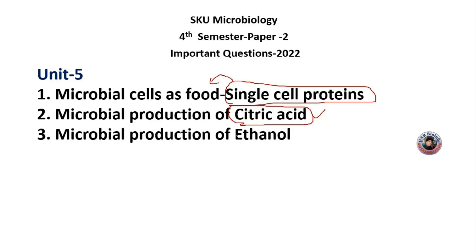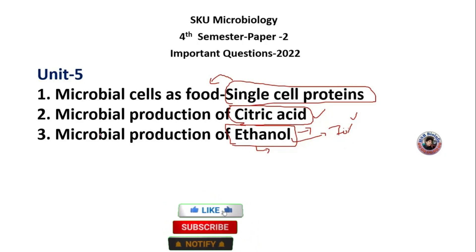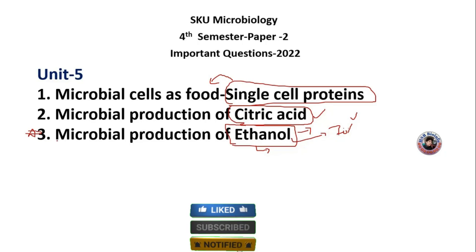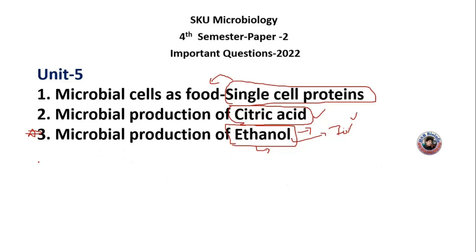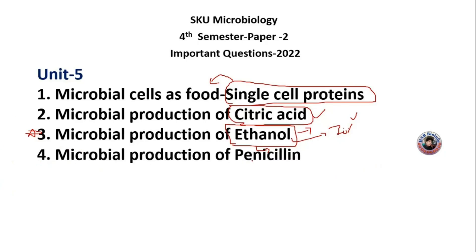Microbial production of ethanol is very important because we regularly use sanitizer as a liquid. Ethanol at 70% is very important to kill pathogenic microorganisms. This is well-proved. The next topic is microbial production of penicillin, which is also very important as an antibiotic produced by microbes.